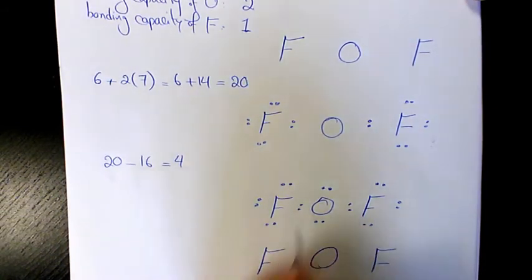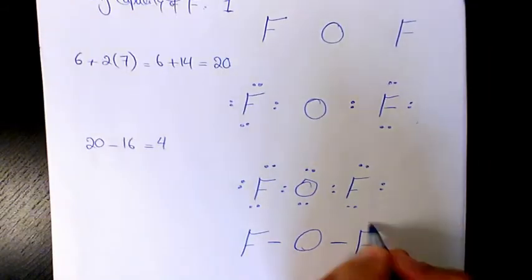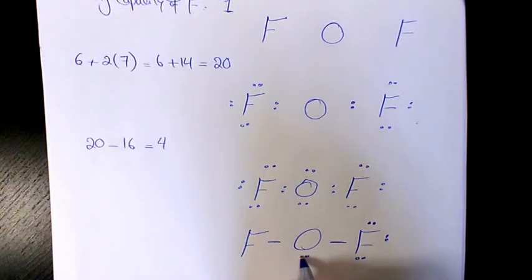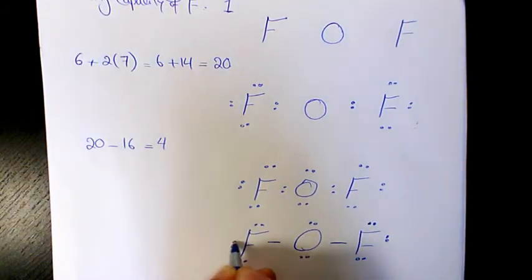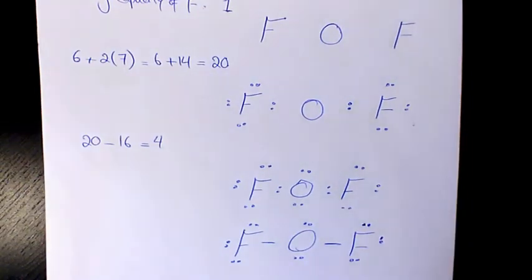The only last thing I need to do is put a dash for each bonding pair and then place lone pairs around each element, which you need to show in a Lewis structure. So that's the Lewis structure for oxygen difluoride.